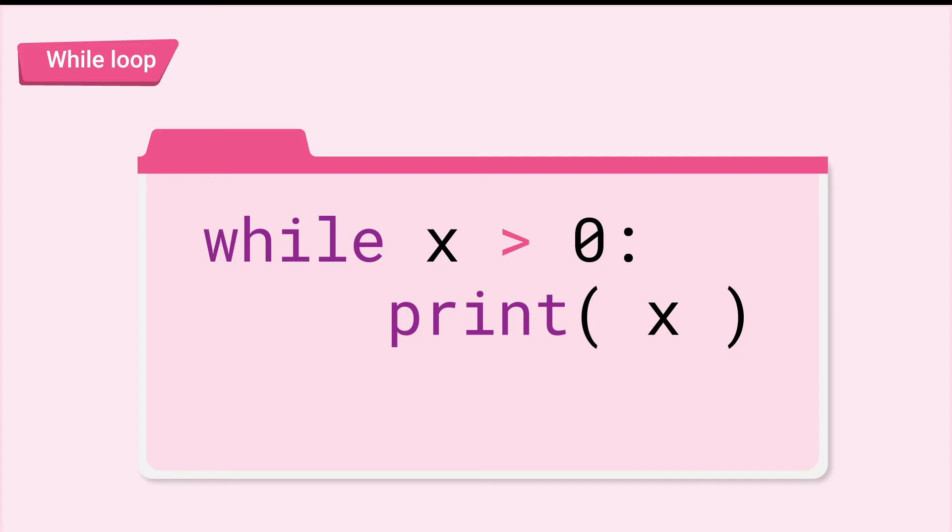This code reads, while x is greater than zero, print x. After printing x, go to the top to check the condition again. If it is met, print x again. Keep doing this while the condition is true.